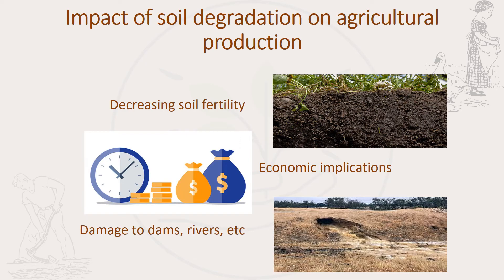Now let's look at the impact of soil degradation on agricultural production. Soil erosion has three important effects we need to consider in order to prevent this type of degradation. First, soil degradation will decrease the fertility of the soil. Second, in terms of economic implications, soil degradation makes farming more expensive. Third, it can damage infrastructure and the environment, including the dams of the farm, the rivers, and surrounding areas.